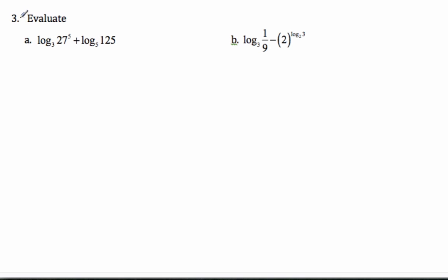Try another example here. Again, pause it, try it yourself first. We're going to evaluate what these expressions mean. Go ahead, pause. Okay, now you'll see me do it. So base 3, and I know that 27 is special in terms of 3, it's 3 cubed to the power of 5, plus log base 5, and 125 is special, it's 5 to the power of 3.